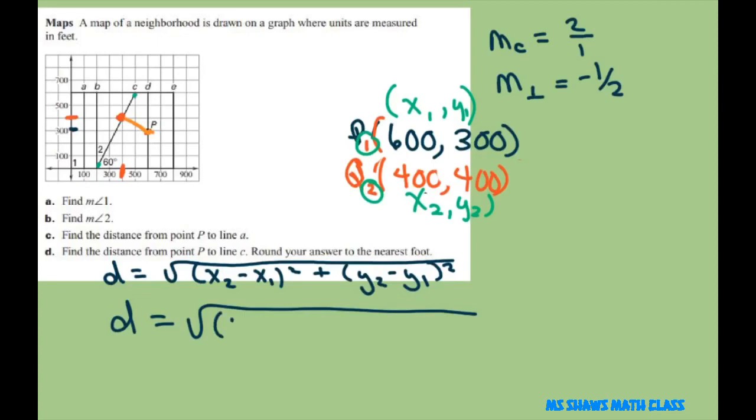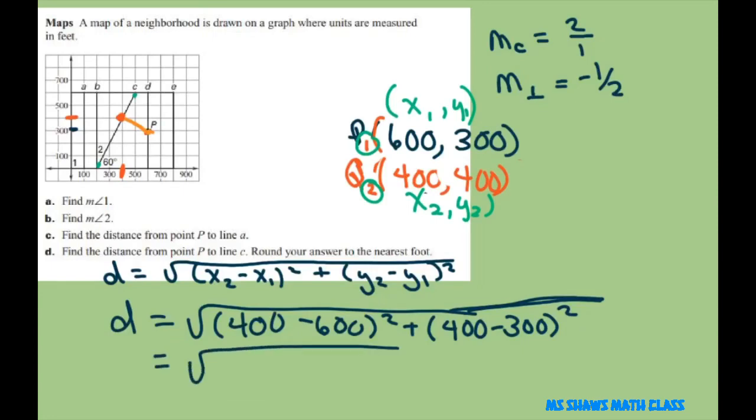We're going to do (400 - 600)² plus (400 - 300)². Make sure you extend your square root. This equals the square root of (-200)² plus (100)².